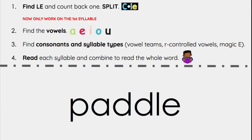Now we are going to do a couple of words in practice. We begin by finding L-E and counting backwards, then we split. So here's L-E, count back one, and we split. We divide our two syllables. Now we're only going to work on the first syllable. We start by finding the vowels — there's an A in the first syllable. Next, we find the consonants after the vowel, or any syllable types: vowel teams, R-controlled vowels, or magic E. Looking in the first syllable, there are no vowel teams, no R-controlled vowels, and no magic E. So we label the next letter after the vowel as a consonant — the D. That means the letter A says 'ah.' So our first syllable says 'pad,' and our second syllable says 'dle' — paddle.